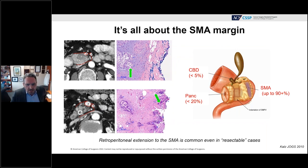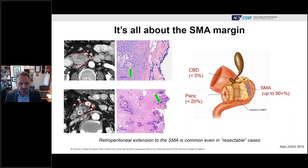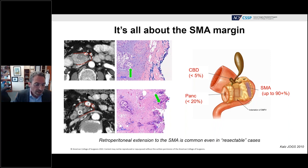When talking about margins, the AJCC examines three margins: the common bile duct margin, the pancreatic transection margin at the neck, and the superior mesenteric artery margin — the tissue between the uncinate process and the SMA. Rates of positive common bile duct or pancreatic transection margins are relatively low because intraoperative histopathologic analysis allows re-resection to a negative margin. In the case of the SMA margin, that's not possible — there is nothing to re-resect except the artery.